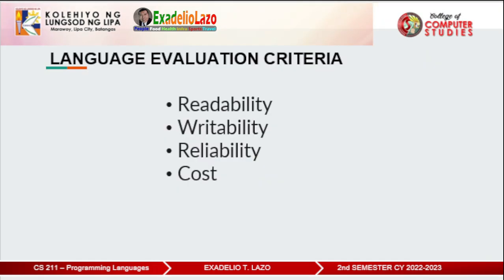Let us move on to the language evaluation criteria. The criteria used to evaluate a language are: first, readability — the ease with which programs can be read and understood. Second, writability — the ease with which a language can be used to create programs in the problem domain. Third, reliability — conformance to specifications, meaning it performs to its specification. And fourth, cost — which is the ultimate total cost.